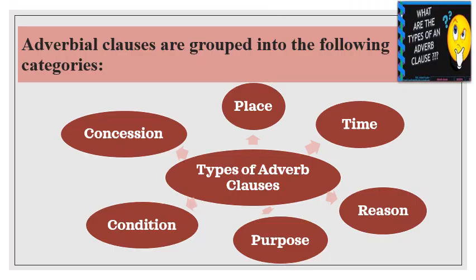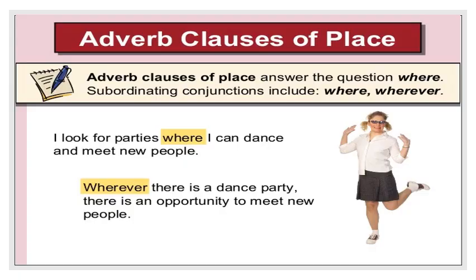Let's move now to the types. We have adverbial clauses of place, of time, reason, purpose, condition, and concession. The first one is adverbial clauses of place. They answer the question 'where,' and the subordinating conjunctions used are 'where' and 'wherever.'